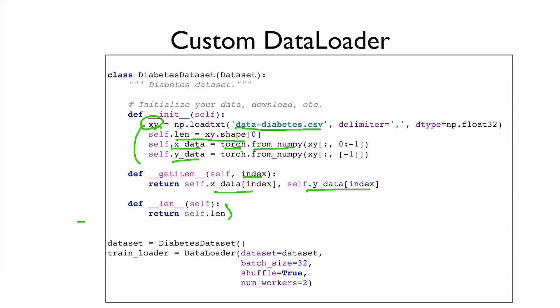And then how can I use this one in our program? So, we just call class, make instance of the data, diabetes datasets, like this, dataset. And then we feed this one to the data loader.